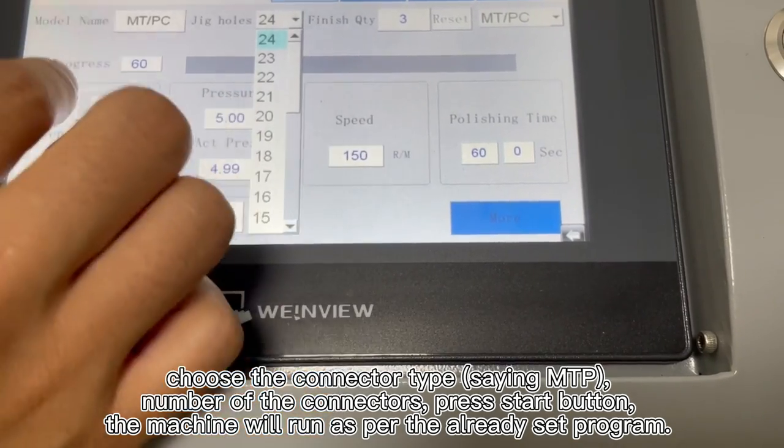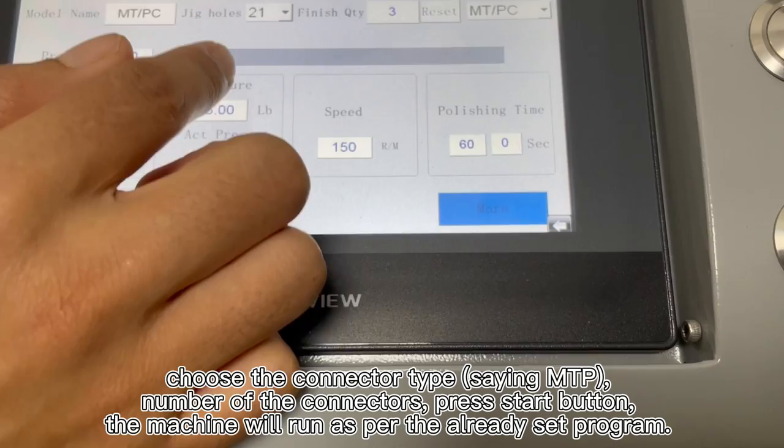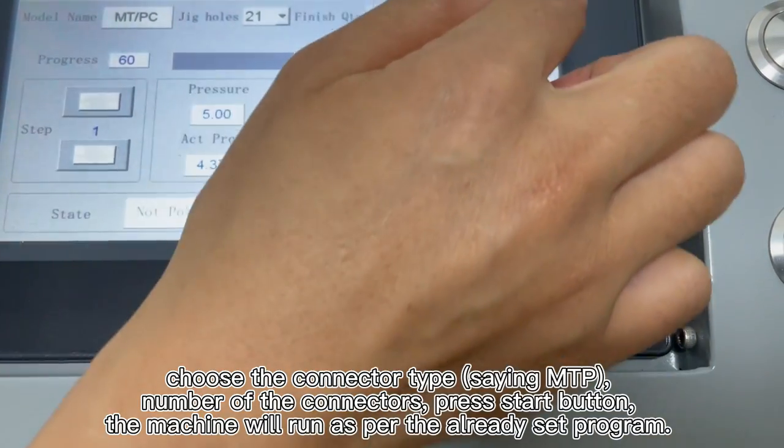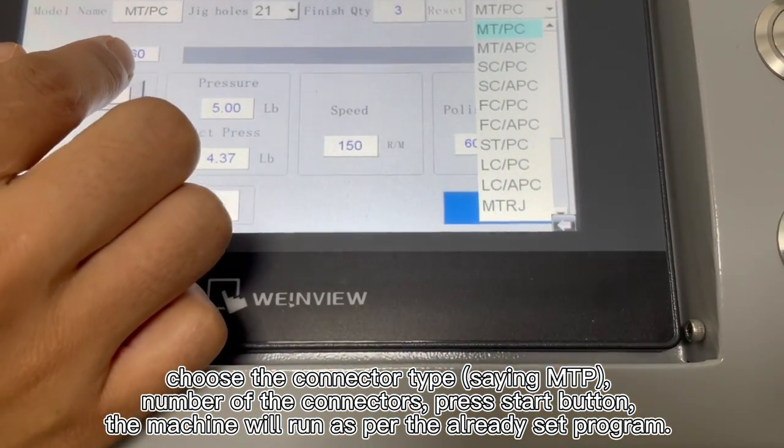And this is the jig holes. For this type, you can change it to a different one. You can choose different jig holes and polish finish quality. Reset means choose different connector types.